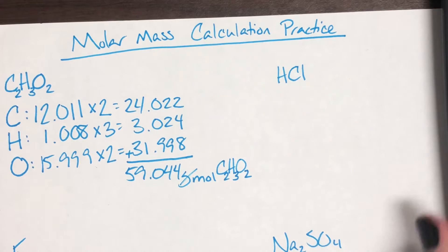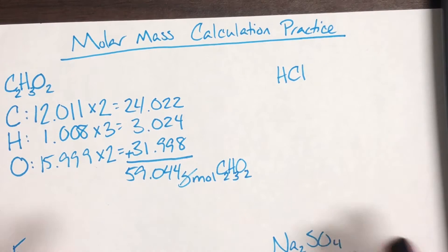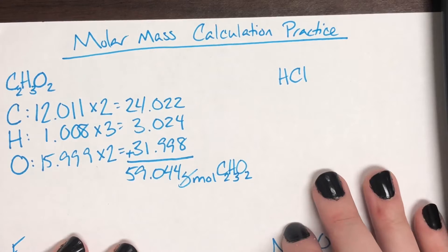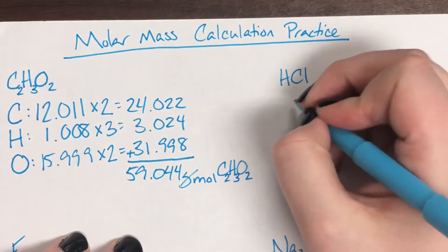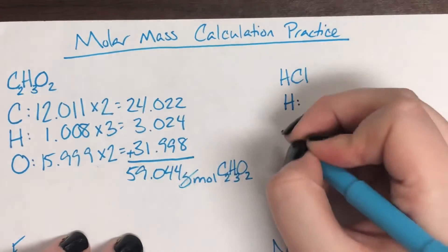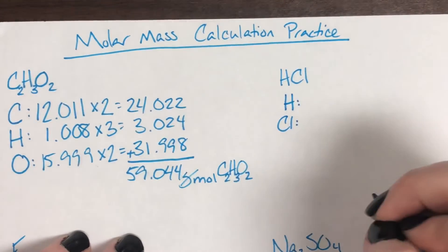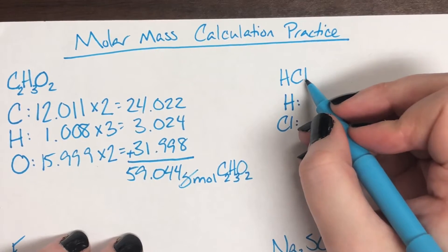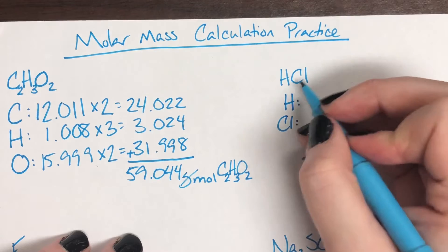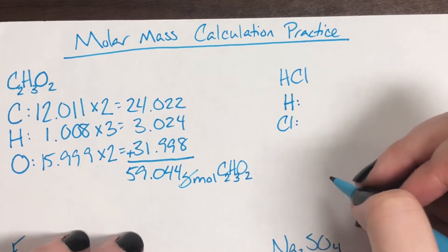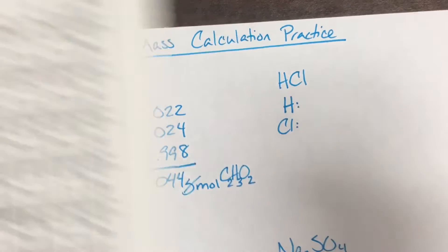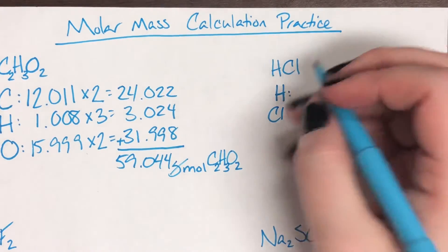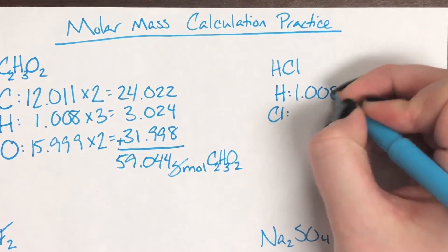Now we're going to do another example problem. Let's figure out the molar mass for HCl. Very first step: list out the elements that are involved. The 'l' is lowercase, so it gets attached to the next uppercase letter — that's C — making Cl its own element, chlorine. Hydrogen's mass on the periodic table is 1.008. Chlorine's mass according to the periodic table is 35.453.